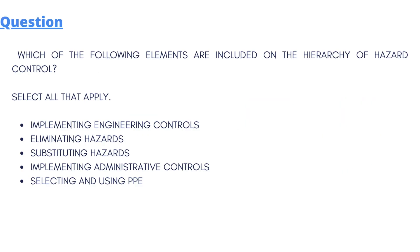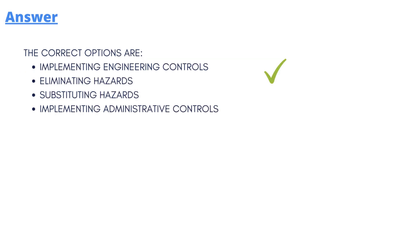For today's question, which we'll be discussing, let's read it out: which of the following elements are included in the hierarchy of hazard control? Select all that apply. There are five options given: implementing engineering controls, eliminating hazards, substituting hazards, implementing administrative controls, and selecting and using PPE. PPE is basically a protective kit.